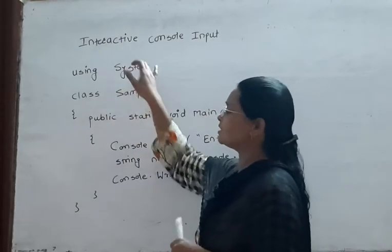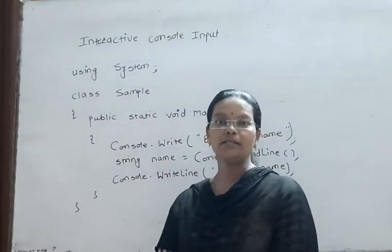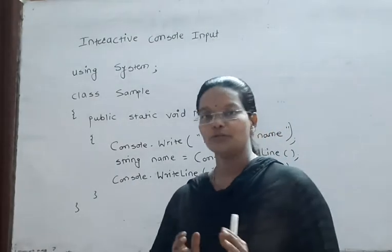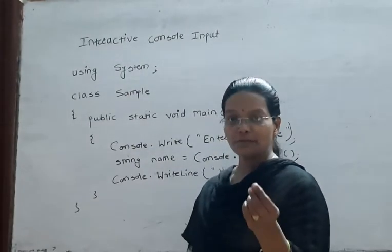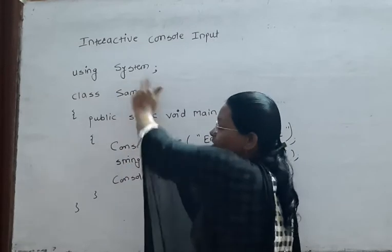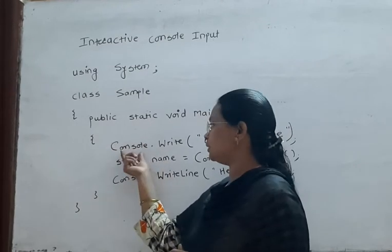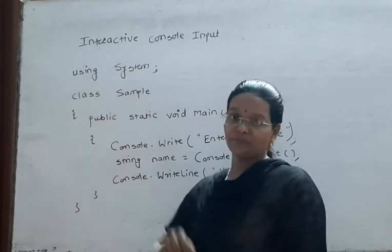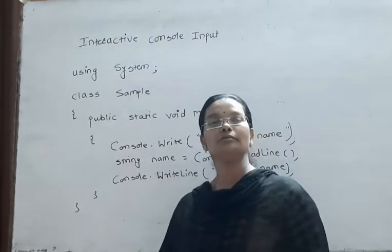Now here we write 'using System'. In the last program we did not use this statement. System is a namespace and this namespace contains all the classes and methods of C#. So if we write 'using System', whenever we use any method — for example, the Write method from the Console class — the Console class is a member of the System namespace. So there is no need to write the full namespace prefix at the start of the program. Whenever we use methods from the System namespace, there is no need to write 'System dot' again.